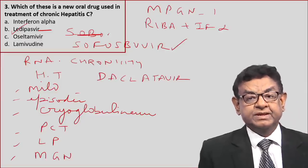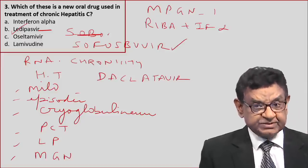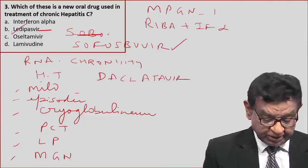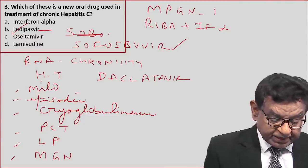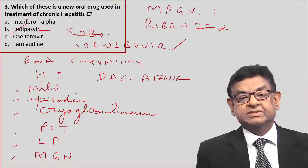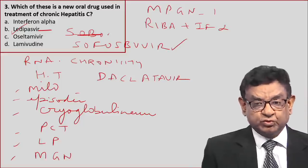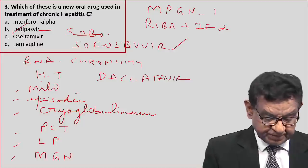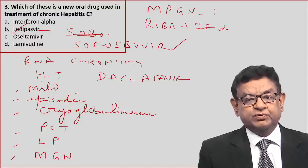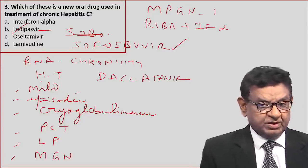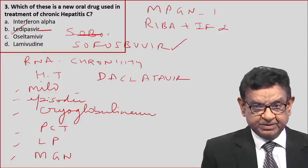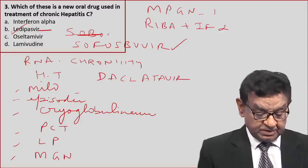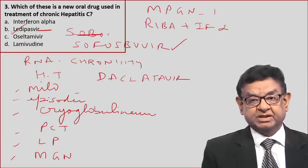Looking at the options: interferon alpha — yes, we use this drug for hepatitis C, but it is not a new drug, it is an old drug. As far as oseltamivir is concerned, we use this for swine flu, not hepatitis C. Lamivudine we use for hepatitis B, not hepatitis C. So the best answer to this question is ledipasvir.